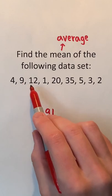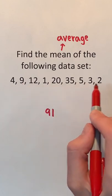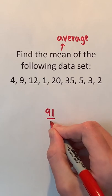We have 1, 2, 3, 4, 5, 6, 7, 8, and 9 elements, so we're gonna divide 91 by 9.